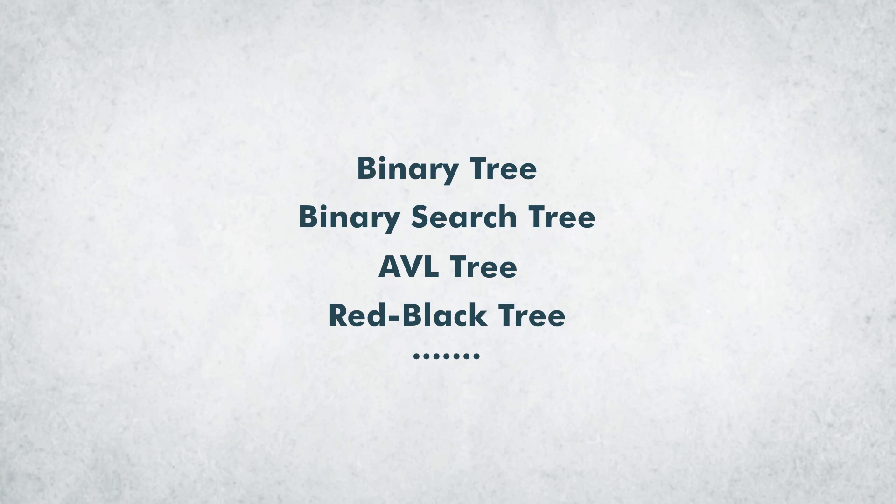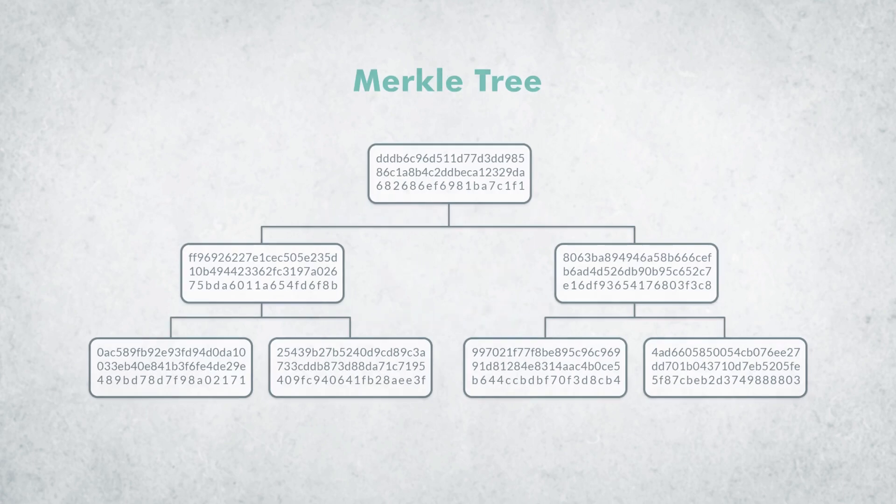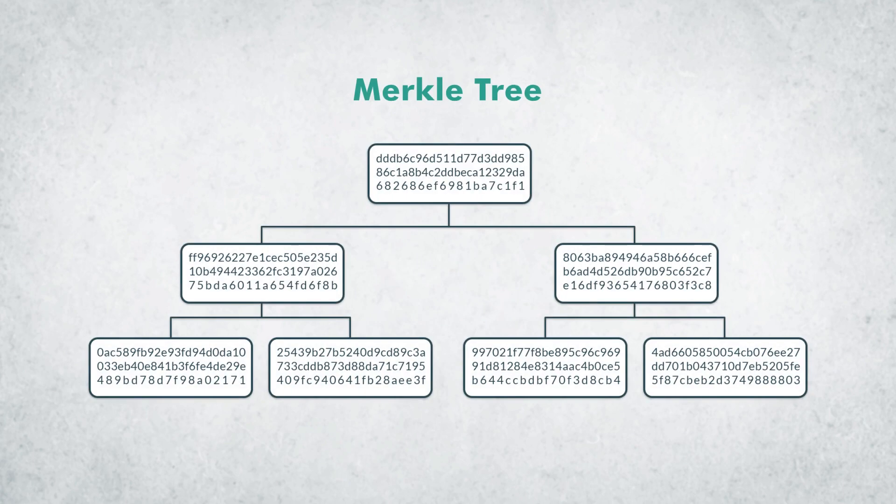In this video, we're going to discuss the tree type Merkle tree, which is a very special tree with some interesting properties. The Merkle tree stores hash values instead of actual data.